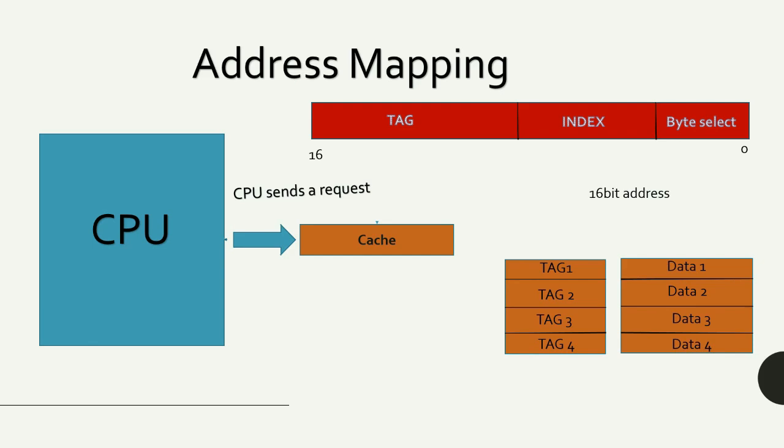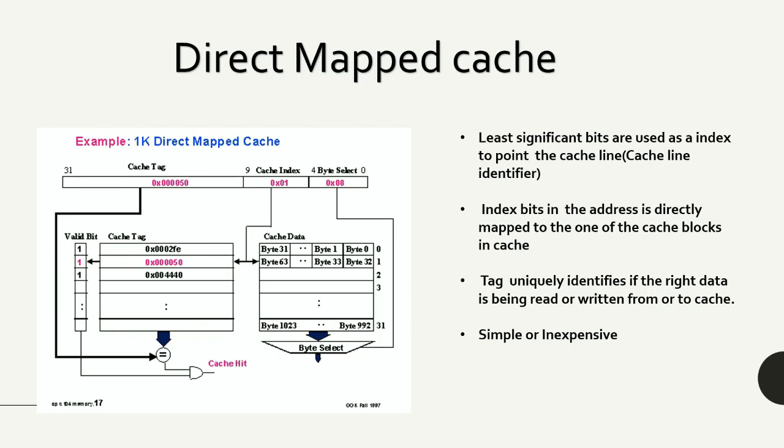The corresponding cache block has a tag which helps us identify the correct data that needs to be read from or written to the cache block. The address, which is 16-bit or 20-bit, is divided into three segments: byte select, index, and tag. I'll emphasize this more on the next slide.